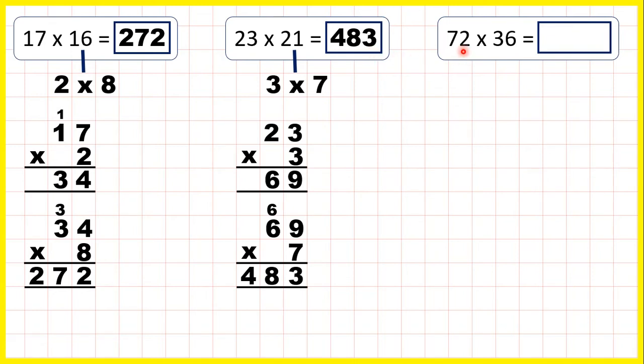Now, 72 times 36. 36 we can make from 6 times 6. So we can multiply 72 by 6 and then take our answer and multiply it by 6 again.